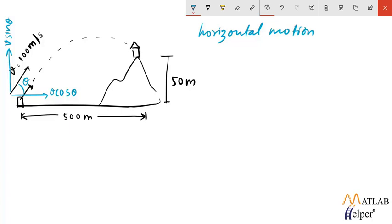So using these two things we can calculate the time of flight, or the time required by the rocket to hit the target, will be given by distance upon speed which is 500 upon v cos theta. So that is equation 1.